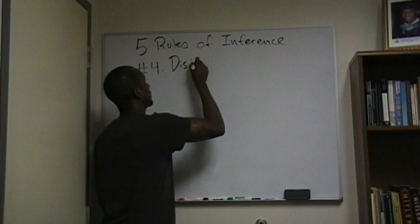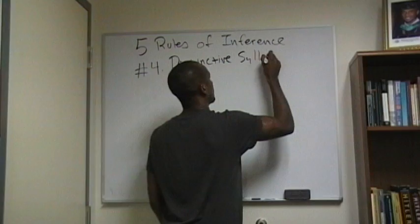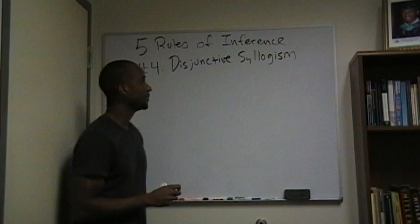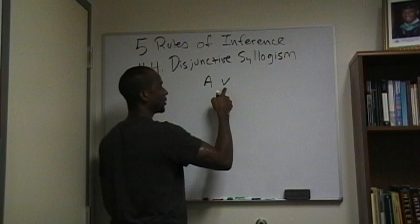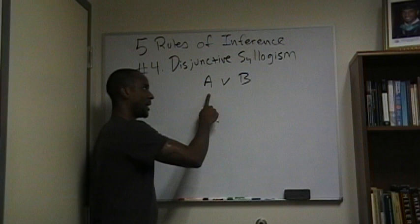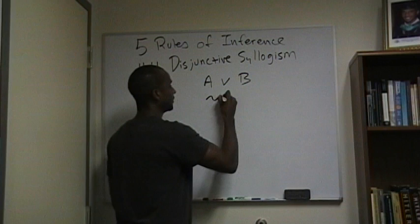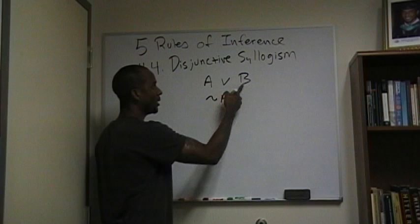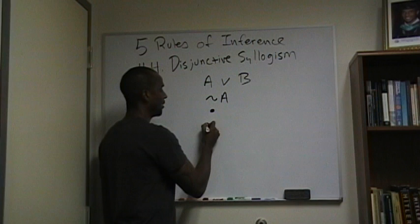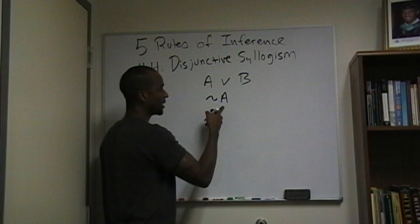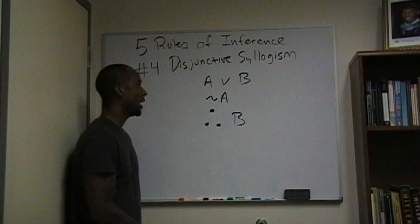Number four is the disjunctive syllogism. It says: either A will happen or B will happen — meaning one of the two must happen. Well, A doesn't happen. Since one of them has to occur and A does not occur, the only option is that B must occur. Therefore, B.